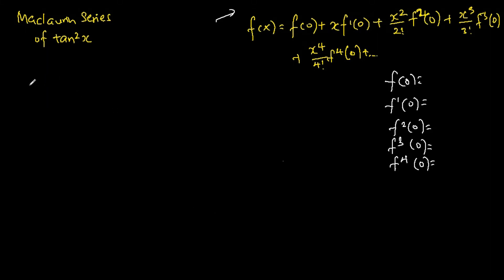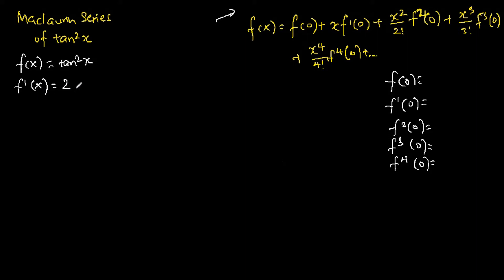Now we start finding the differentiated forms of the function. We define f(x) as tangent squared x. The next thing we do is differentiate the function one time, and we get 2 tangent x secant squared x.